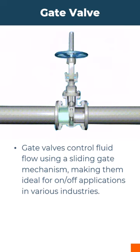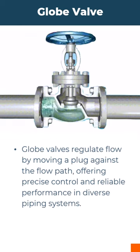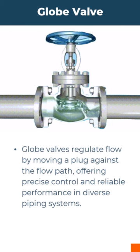Gate valves control fluid flow using a sliding gate mechanism, making them ideal for on-off applications. Globe valves regulate and control the flow by moving a plug against the flow path.